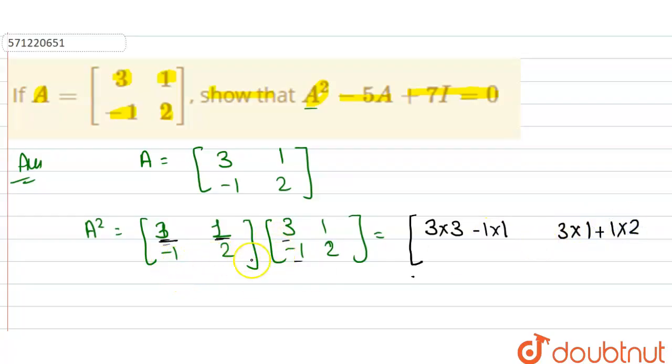Similarly, second row multiply with first column, that is minus 1 multiply with 3 plus 2 into minus 1. Similarly, second row multiply with second column, that is minus 1 into 1 and 2 into 2.